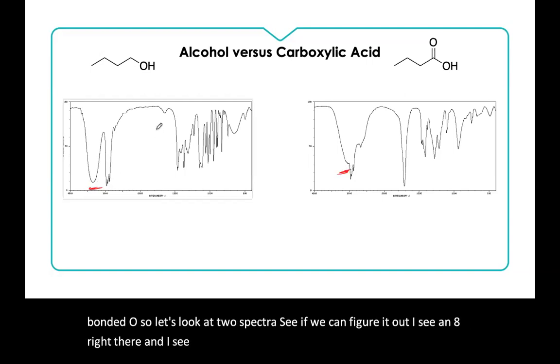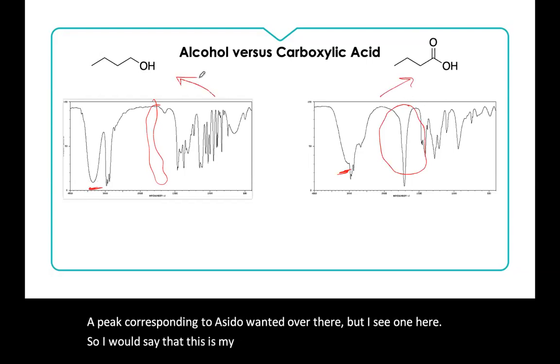I see an OH right there, and I see an OH right there. I don't see a peak corresponding to a C double bonded O there, but I see one here. So I would say that this is my carboxylic acid and that's my alcohol. So remember to look at what's there and what's not there.